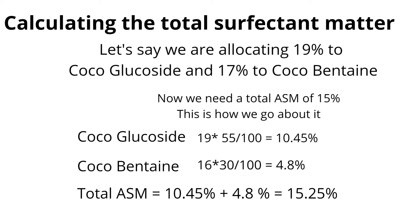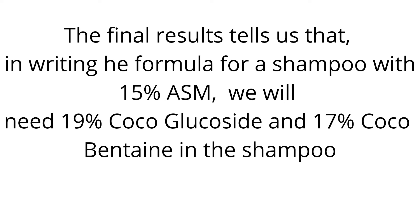If you do this allocation and calculate the total ASM and it does not reach 15%, just tweak the calculation — increase the percentages of the two surfactants until you get to 15%. Once you get there, you know you have the right total active surface matter in your shampoo. The final result tells us that for a shampoo with a total ASM of 15%, we need 19% coco glucoside and 17% coco betaine. This is essentially how to calculate the active surface matter for your shampoo.